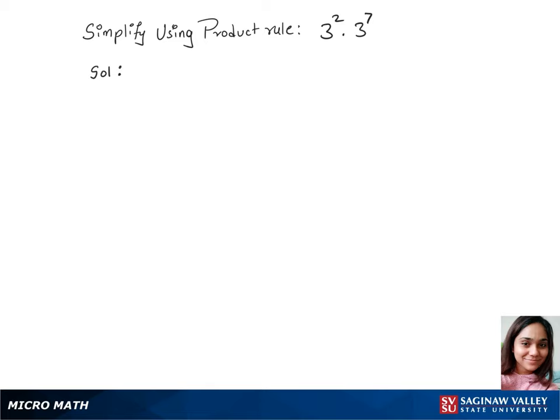To solve 3 power 2 times 3 power 7, we'll use the product rule, which is: a power m times a power n equals a power m plus n.